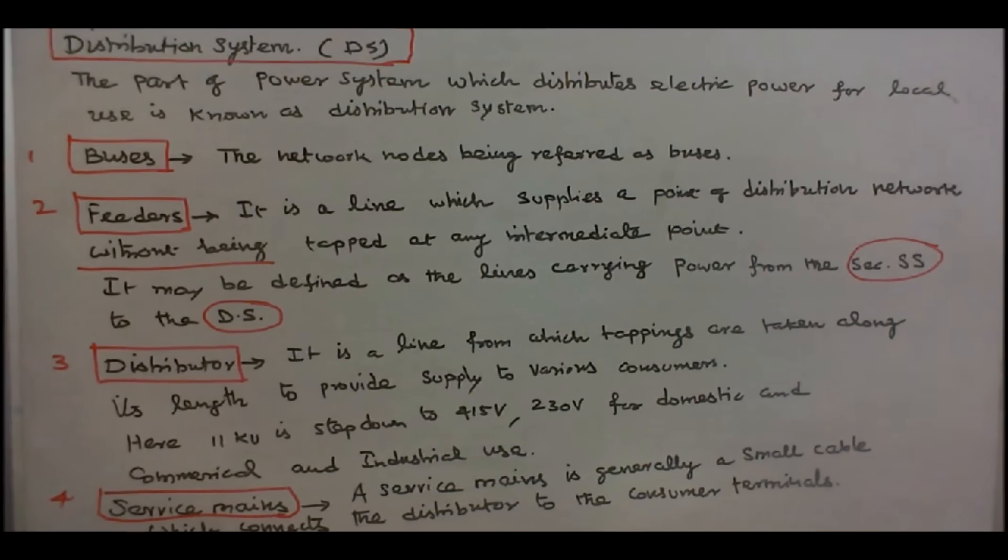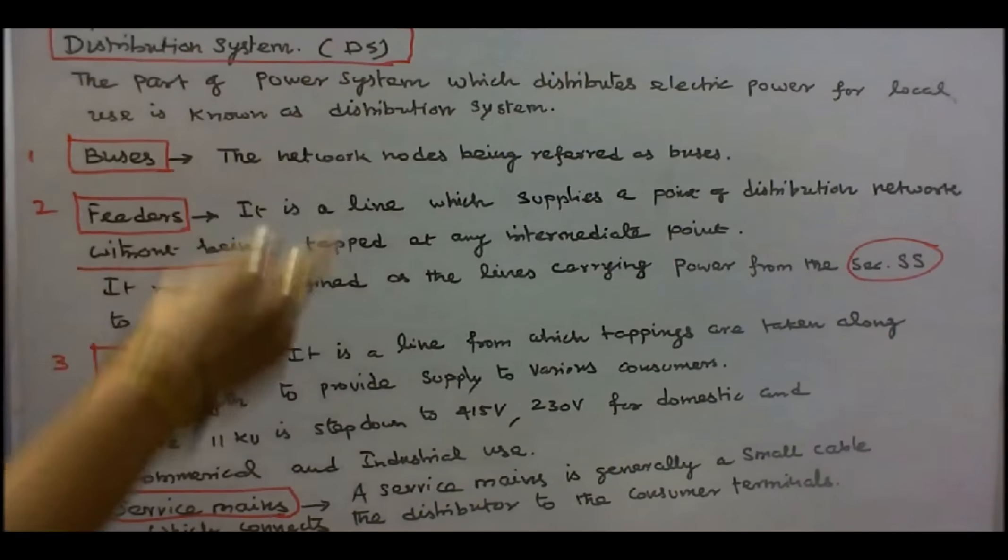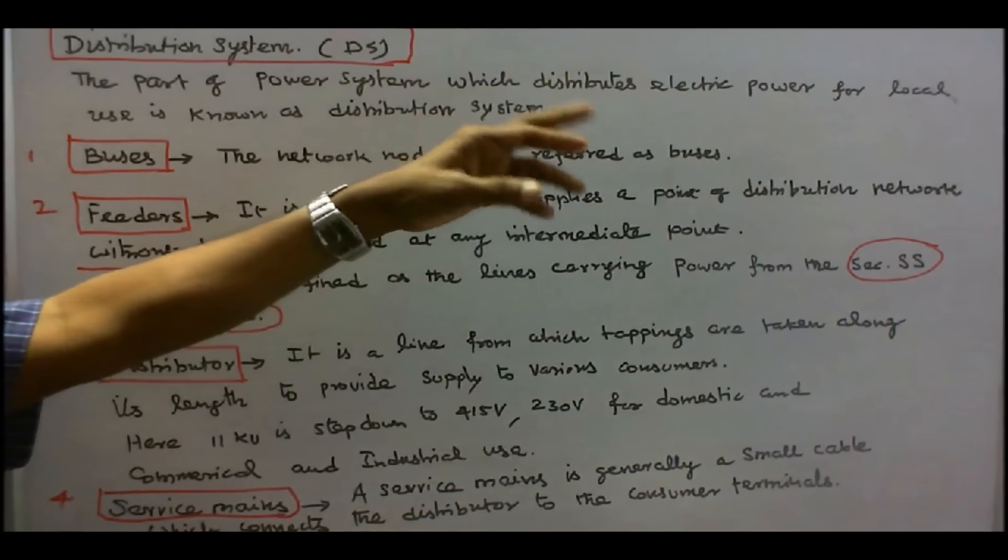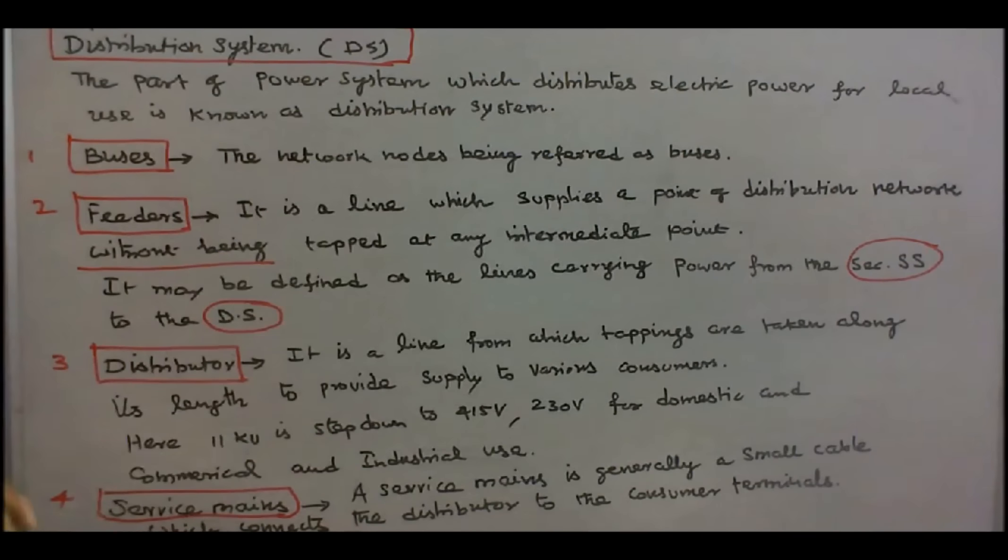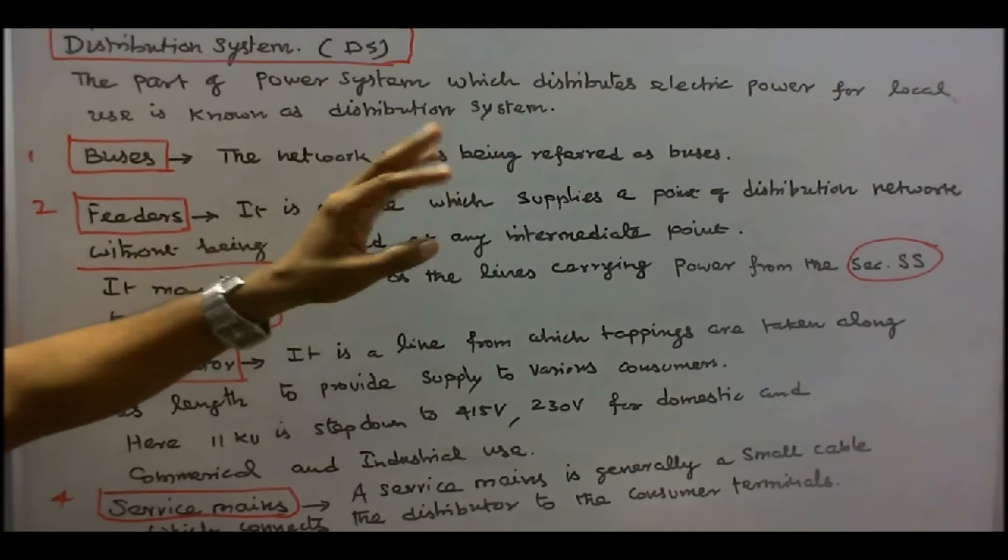What is meant by distribution system? The path of power system which distributes electric power for local use is known as distribution system. There are four terms frequently used in distribution system. Number one, buses. The network nodes being referred as buses.